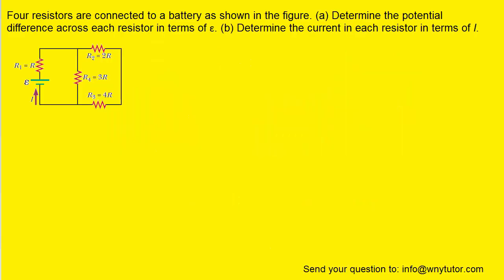If you haven't done so yet, please pause the video and try to solve the question on your own before listening on. Our goal here is to determine the potential difference across each of the resistors in part A. In order to do that, we're going to have to take this relatively complex circuit and simplify it.